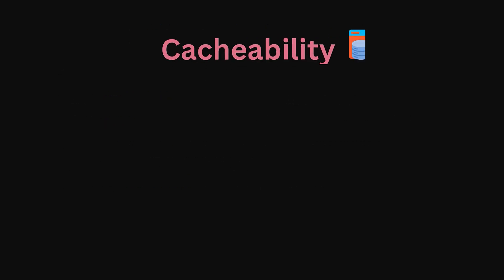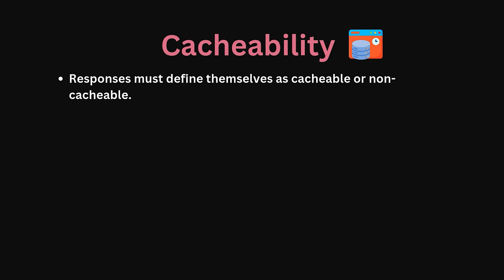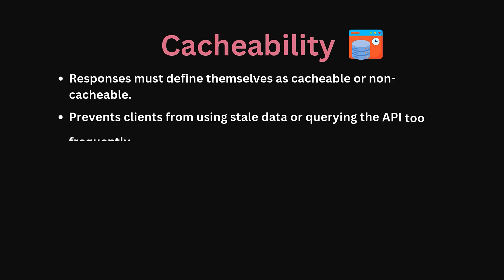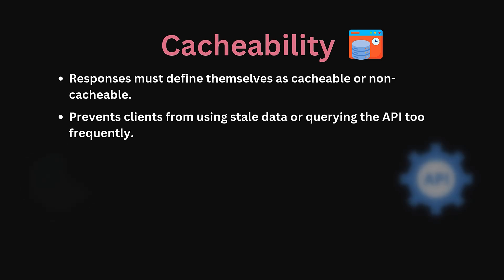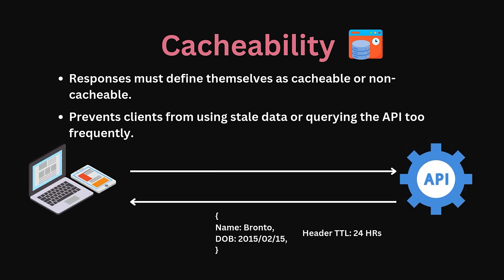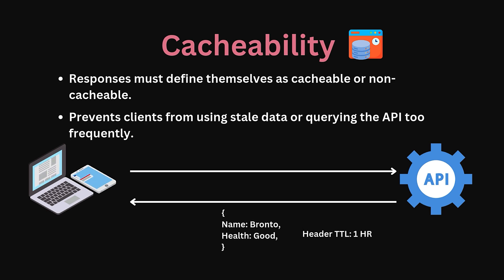Next, REST recommends Cacheability. Responses must define themselves as cacheable or non-cacheable to prevent clients from reusing stale data or calling the API too frequently. For example, when retrieving Bronto's basic profile information such as date of birth — which rarely or never changes — the API can include cache headers indicating the response can be cached for 24 hours. However, for Bronto's health status, which might change frequently, the response would include headers indicating no caching or a very short cache duration.